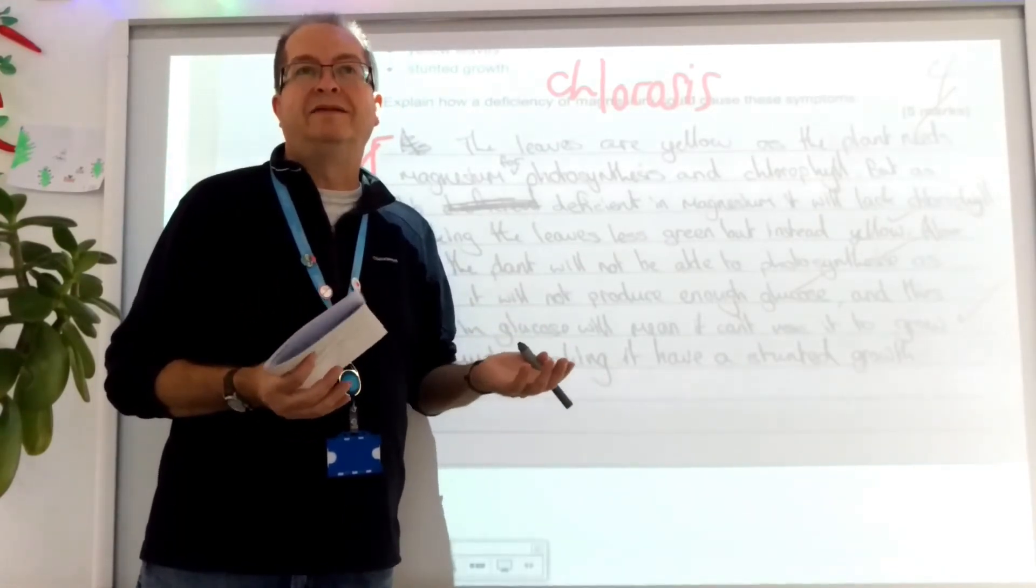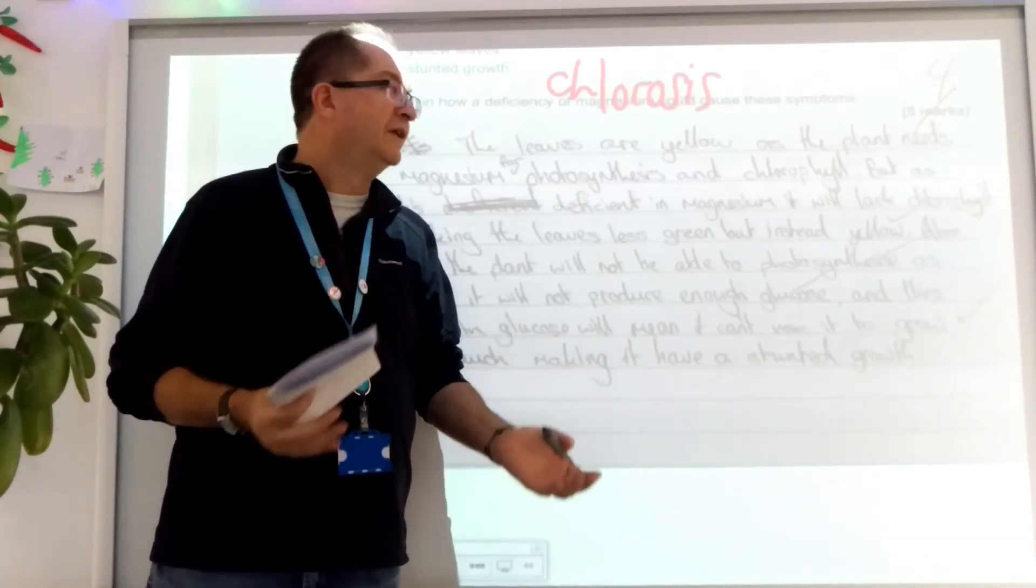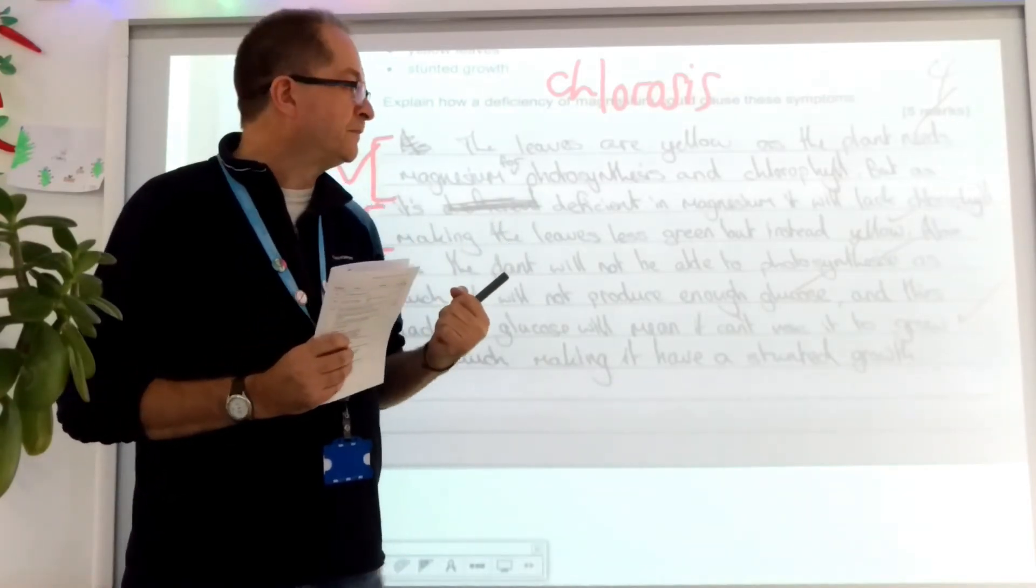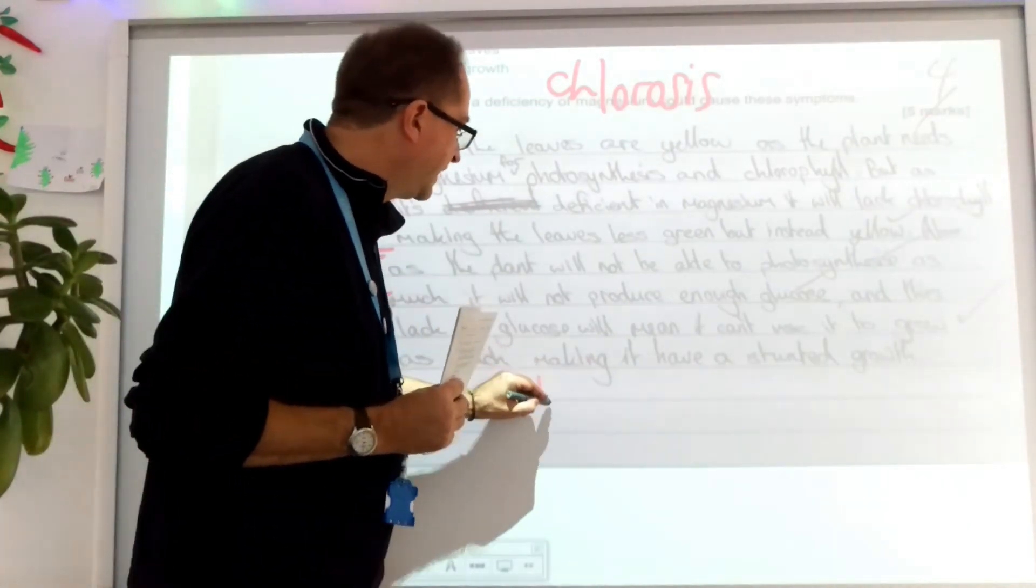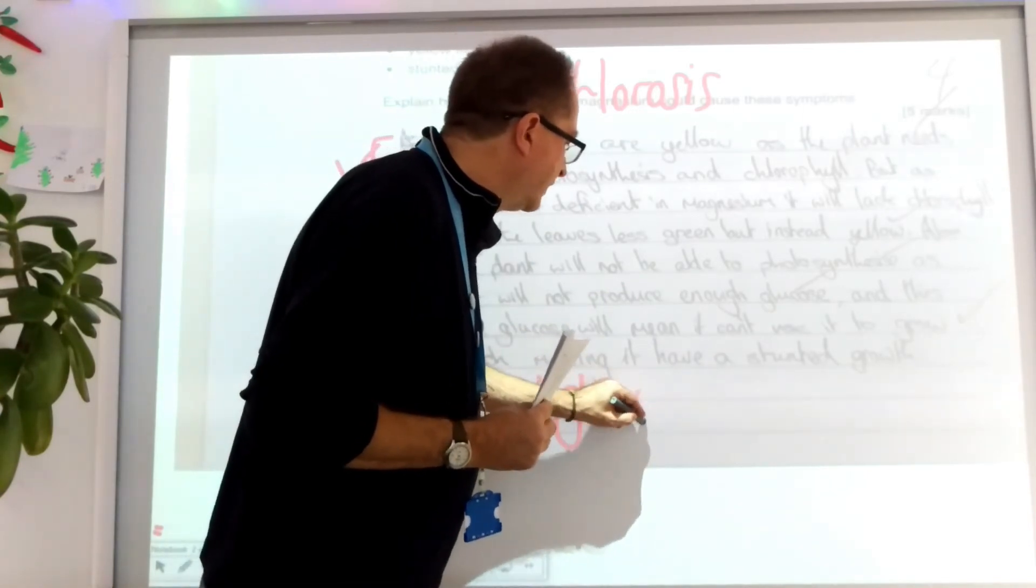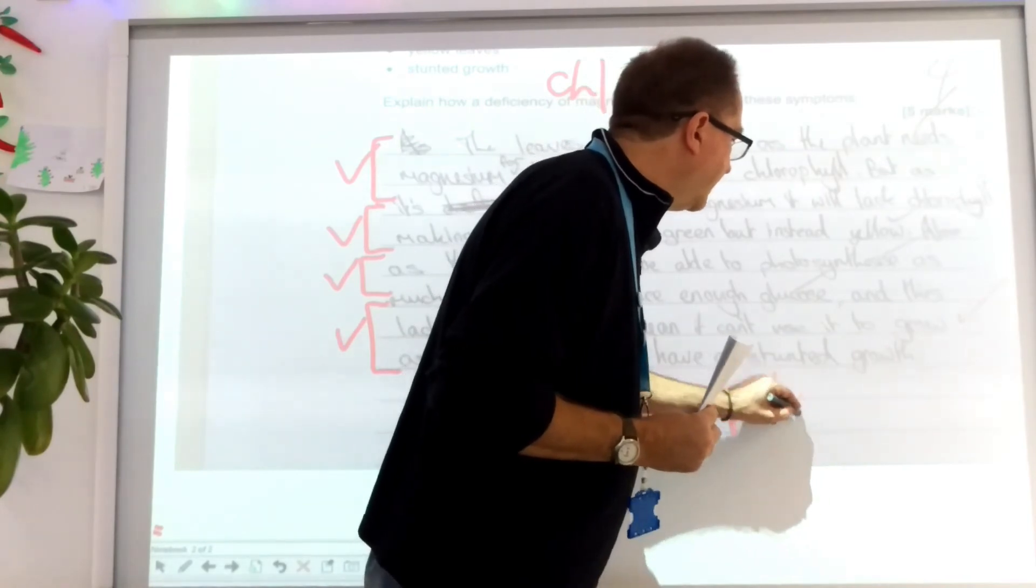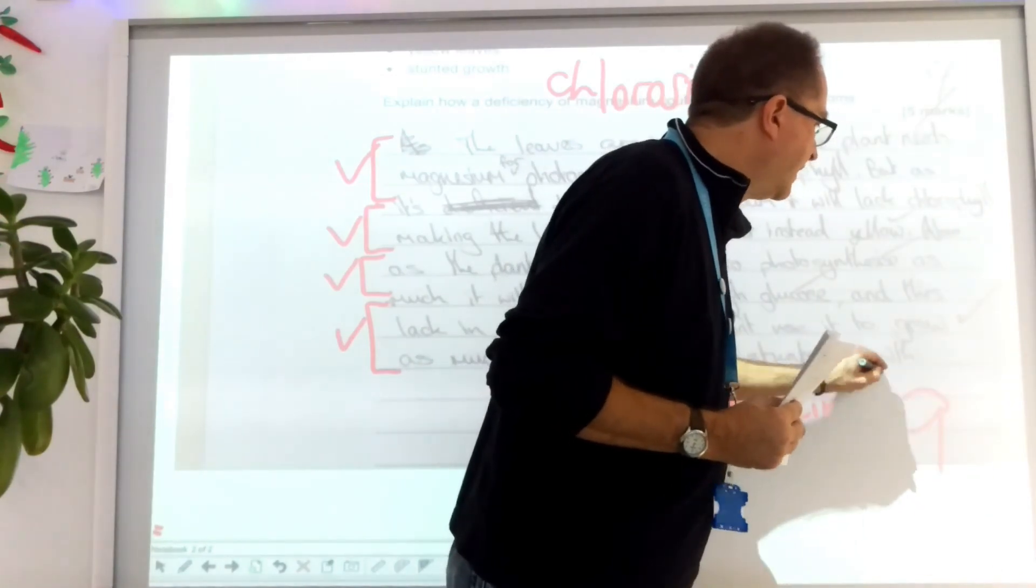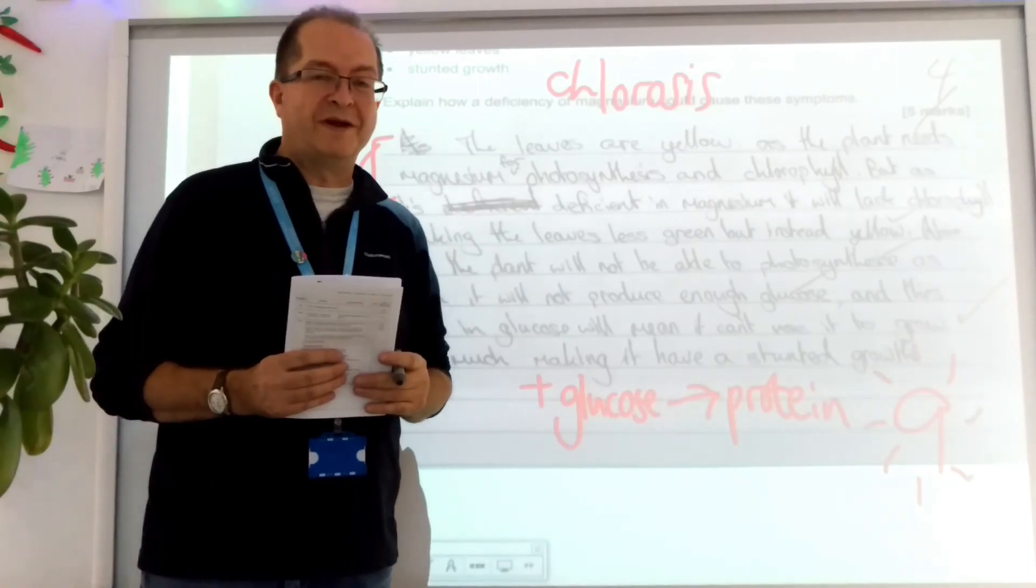They've got to build out of glucose because that's the only product of photosynthesis that they use. So that's what they've missed. So all we need to add to get that fifth mark is plus glucose is converted to protein, which is needed for growth. And that will be your five marks. That will be your level nine answer. Magical, magical level nine that we're all looking for. Thank you very much.